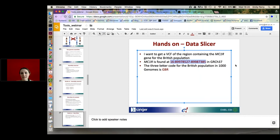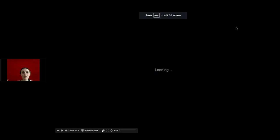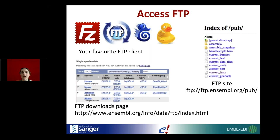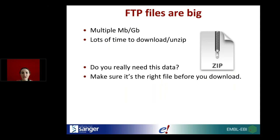We have an FTP site containing files of our complete database — things like FASTA sequences, gene sets, variants, and other data. A lot of people use these complete files for analyzing next-generation sequencing data when they need a reference file. You can access the FTP site through your favorite FTP client or the FTP downloads page. The files can be multiple megabytes or gigabytes, so it's always a good idea to make sure the data you're downloading is really what you need.